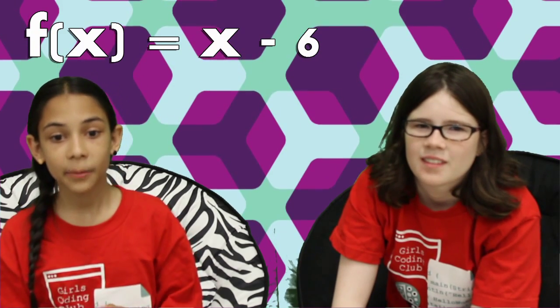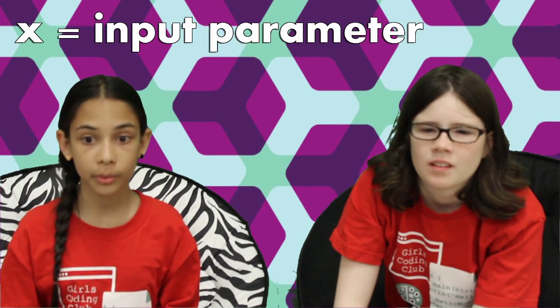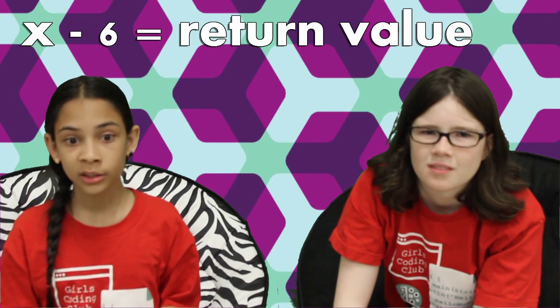This function in math takes any number, x, and returns whatever number it's equal to, x minus 6. In the context of programming, x is called an input parameter, and x minus 6 is called the return value. Methods and functions can have any number of parameters, even zero, but they can never have more than one return value.